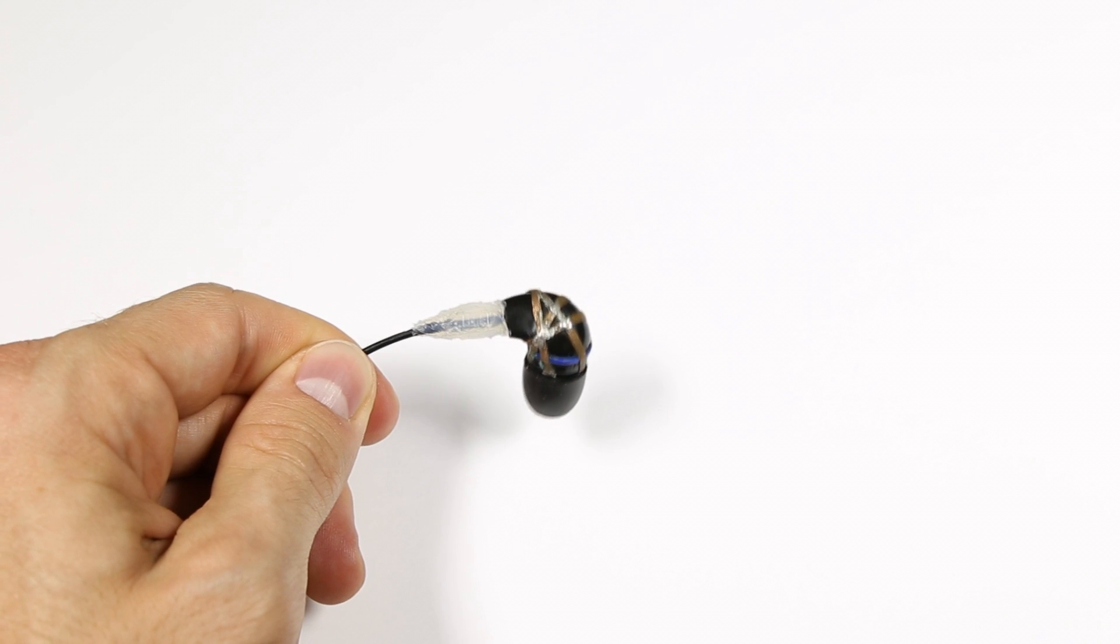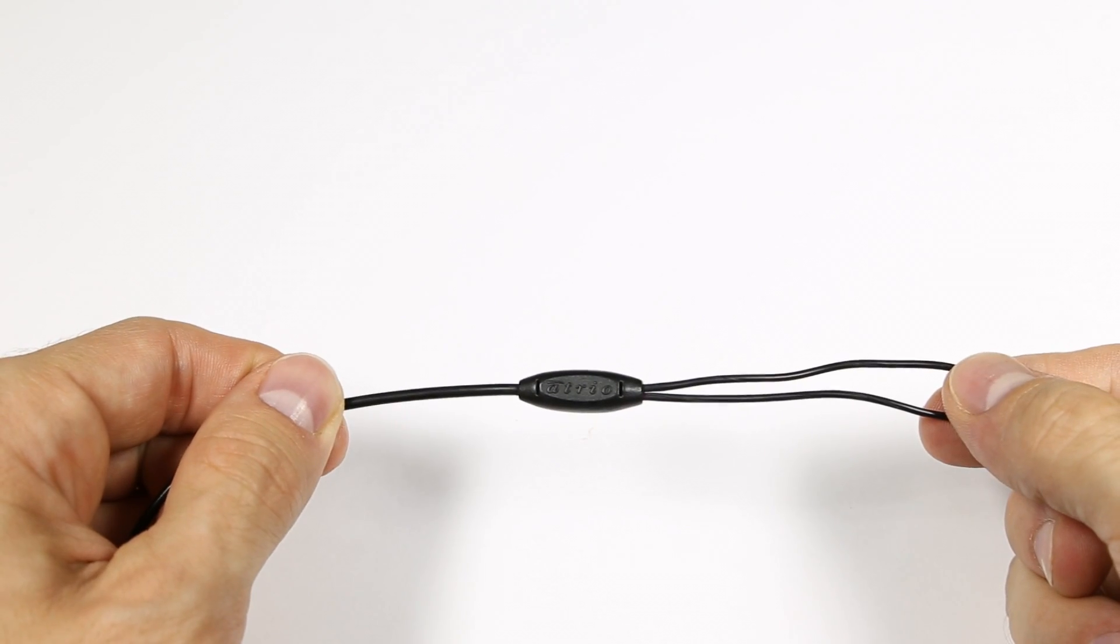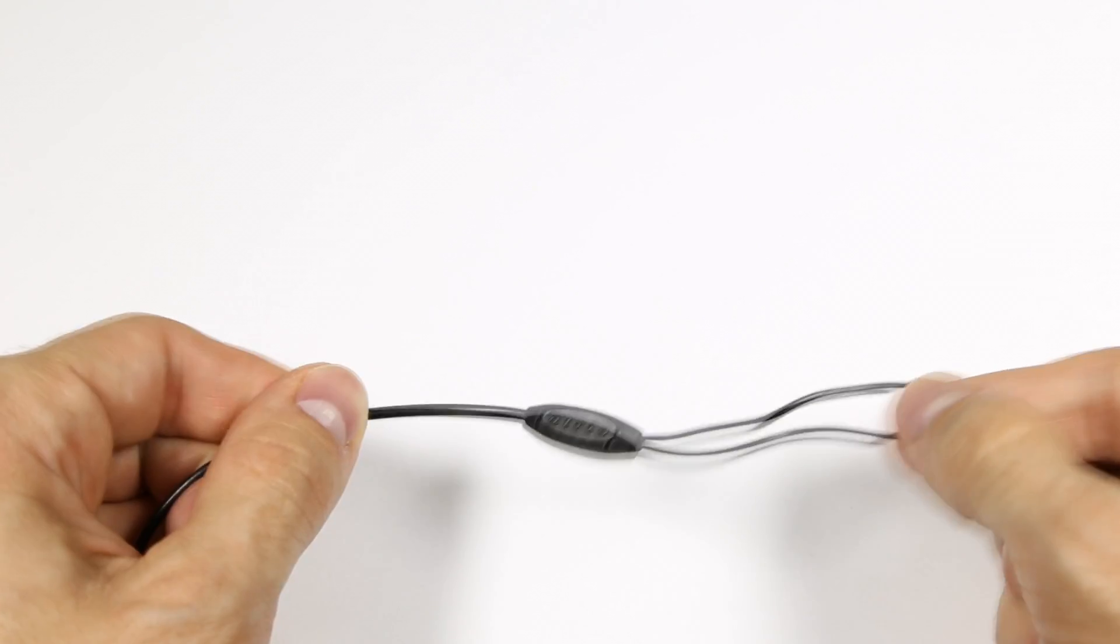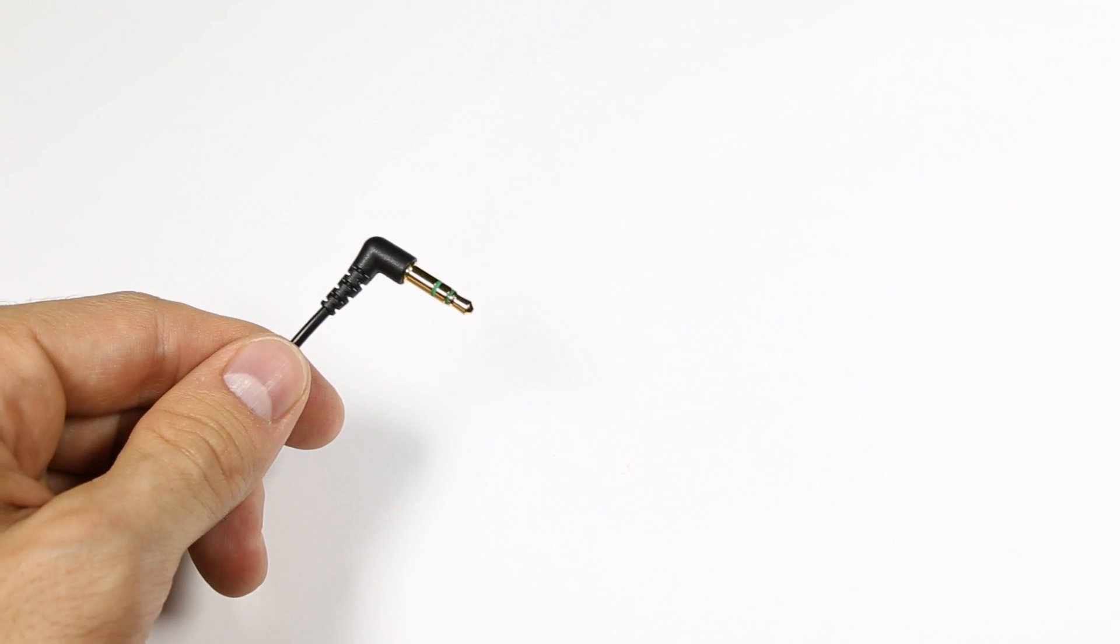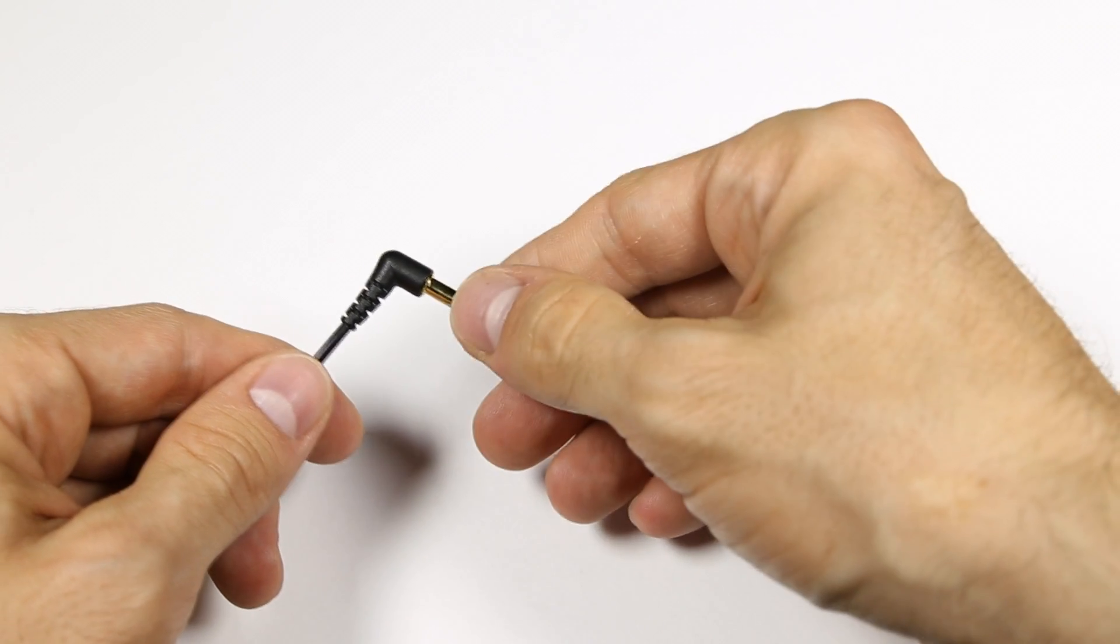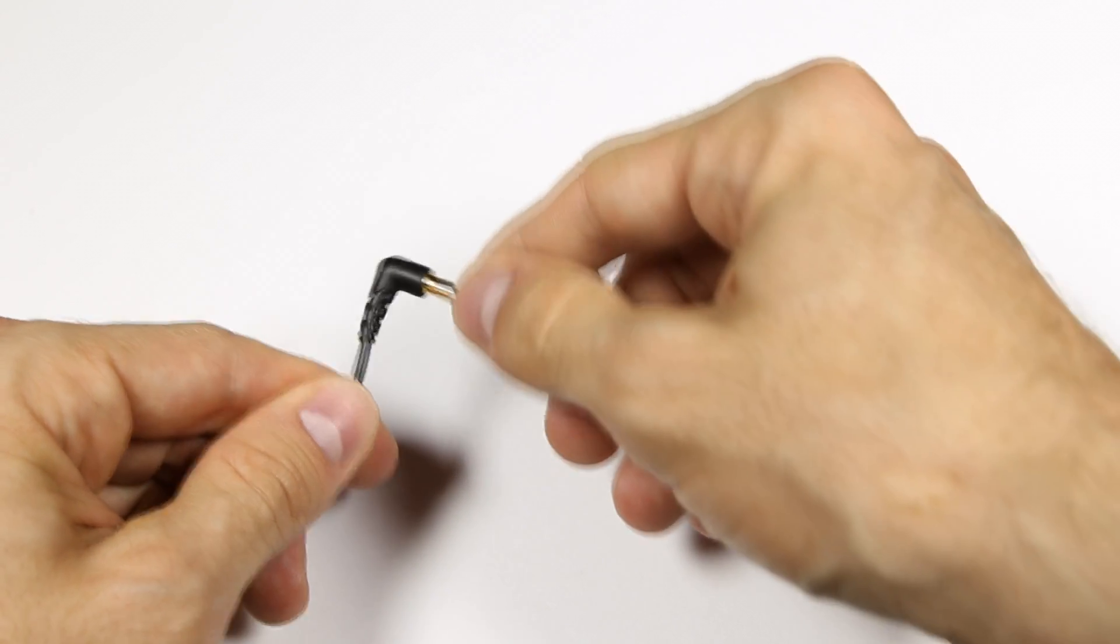Another spot is where the two earbud cables join to the single cable. Probably the most common spot is the 3.5 millimeter jack. The strain relief on these things usually isn't very good, so the wires will eventually break and you'll get a short next to the plug.